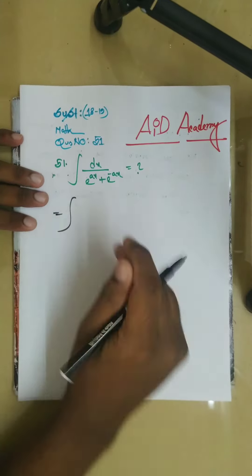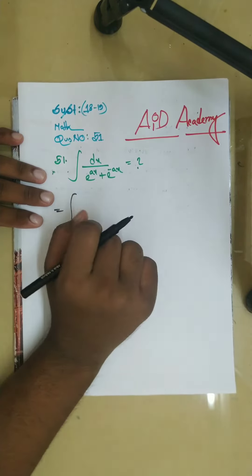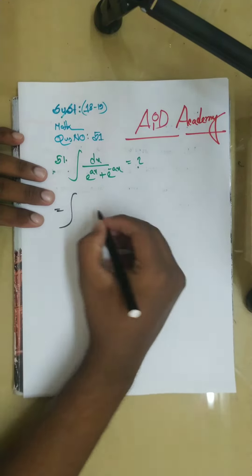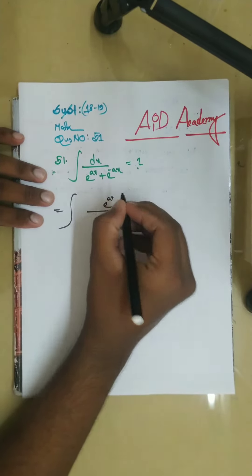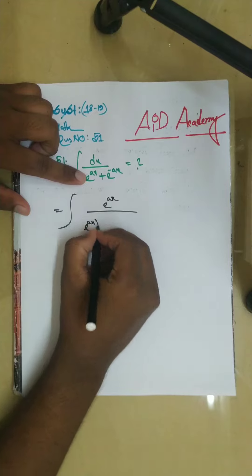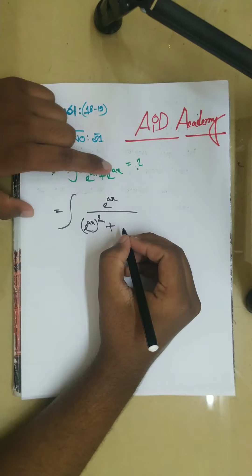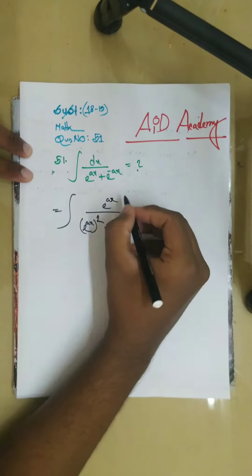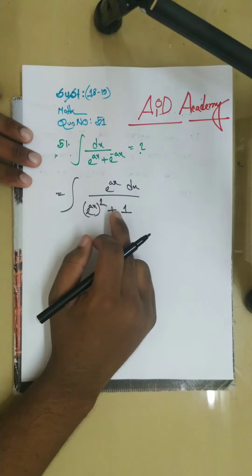First of all, I'm going to ask you: e to the power ax, whole square, and e to the power minus ax. So e to the power ax times e to the power ax is equal to e to the power 0, meaning 1. So this becomes e to the power ax dx divided by e to the power ax whole square plus 1.